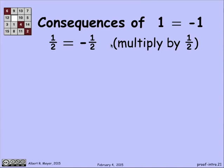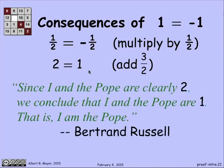If I multiply both sides by one-half, I get one-half equals minus one-half. Now I can add the same thing to both sides. That's a perfectly sound rule for reasoning about equalities. If I add three-halves to both sides, I've turned 1 equals minus 1 into 2 equals 1. Now I'm in great shape to prove all kinds of things. Here's a famous one: since I and the pope are clearly 2, we conclude that I and the pope are 1. That is, I am the pope. And I've just proved to you this absurd fact.